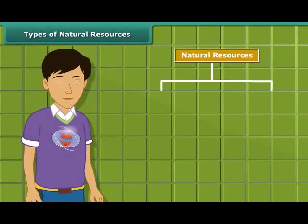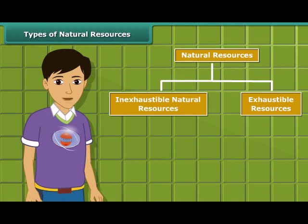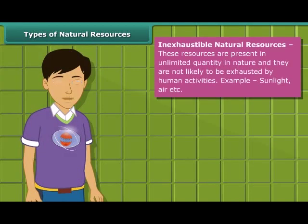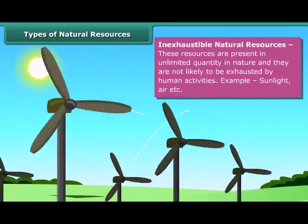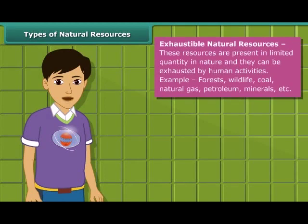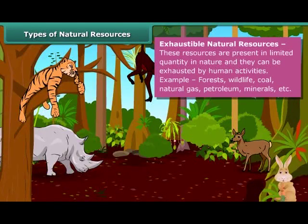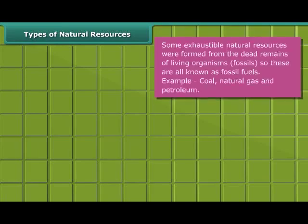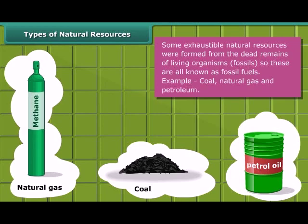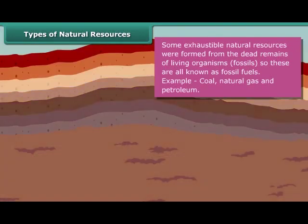Natural resources can be broadly classified into two categories. Inexhaustible natural resources are present in abundance and are unlikely to be exhausted by human activity — sunlight and air are examples. On the other side, exhaustible resources are limited and can be depleted by human activities. Forests, wildlife, coal, natural gas, petroleum, and minerals are examples. Some exhaustible resources — coal, natural gas, and petroleum — were formed from dead remains of living organisms called fossils, and are known as fossil fuels.